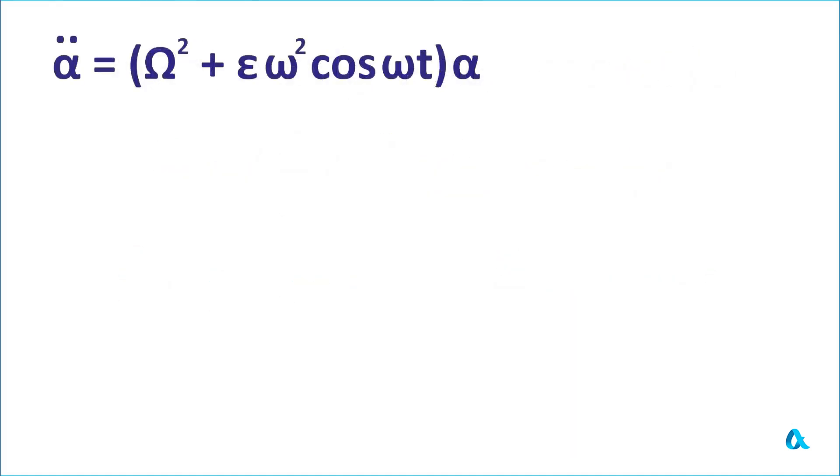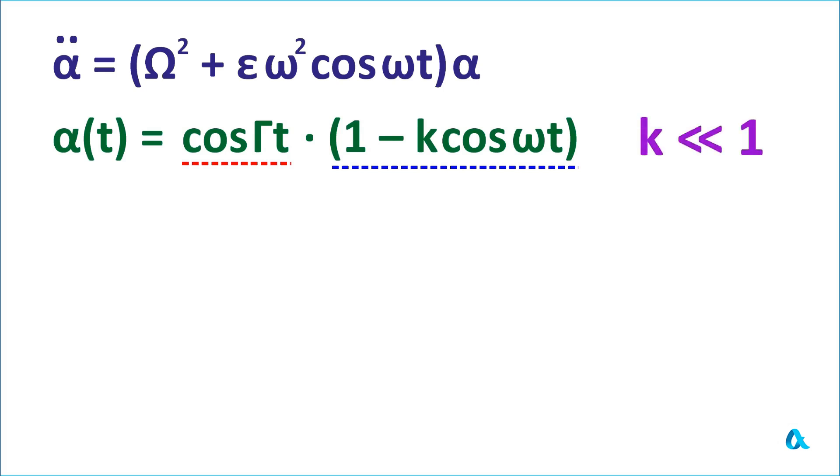Now we will solve this equation. And we will look for the solution according to the results of computer modeling in the form of the product of two factors: slow, cosine γt, and fast (1 - k cosine ωt) where k is much less than 1.